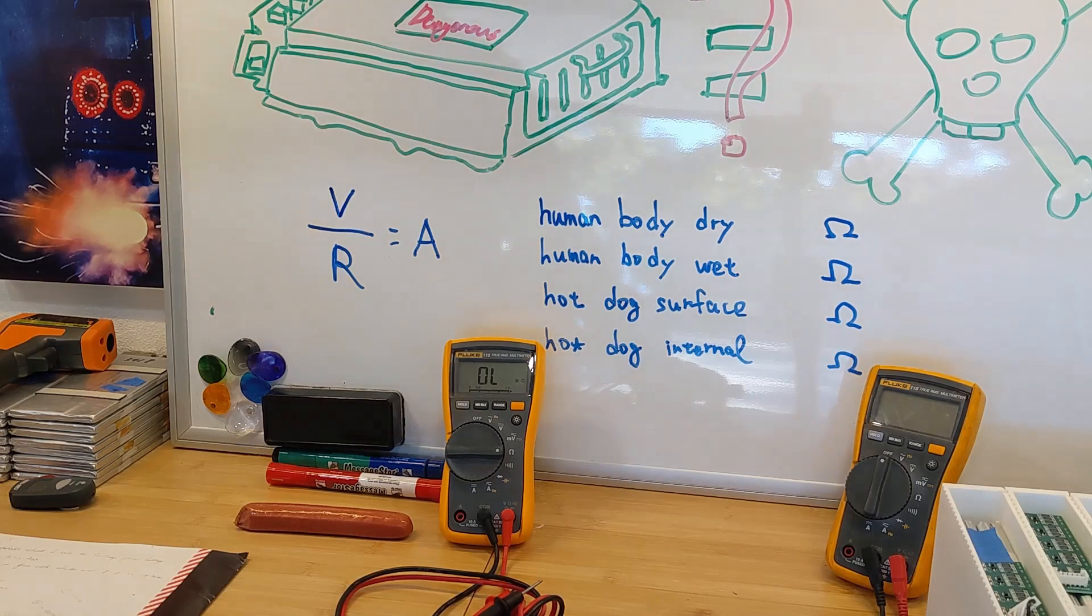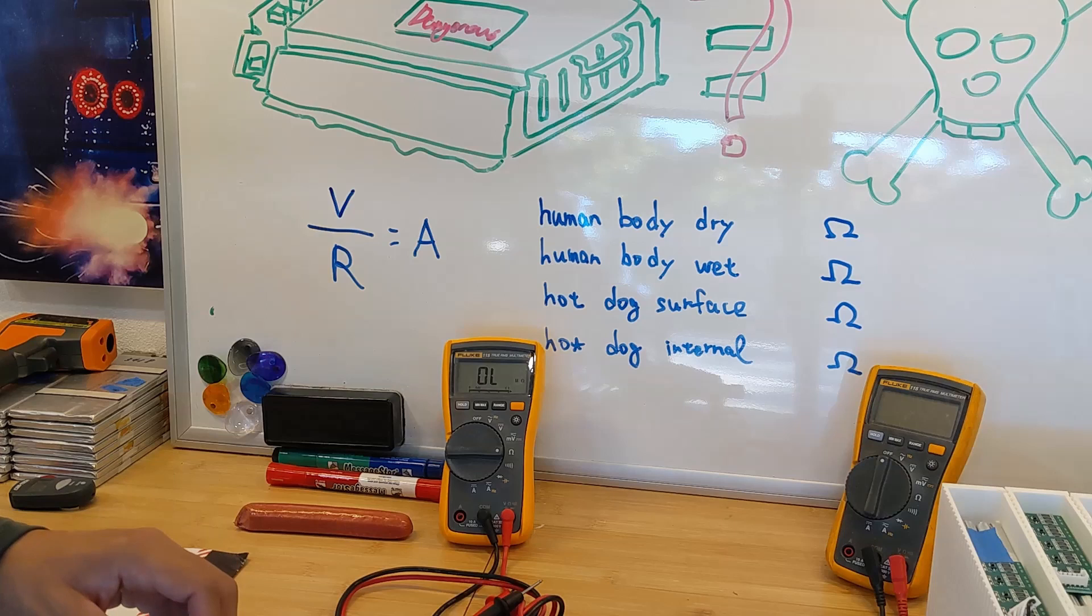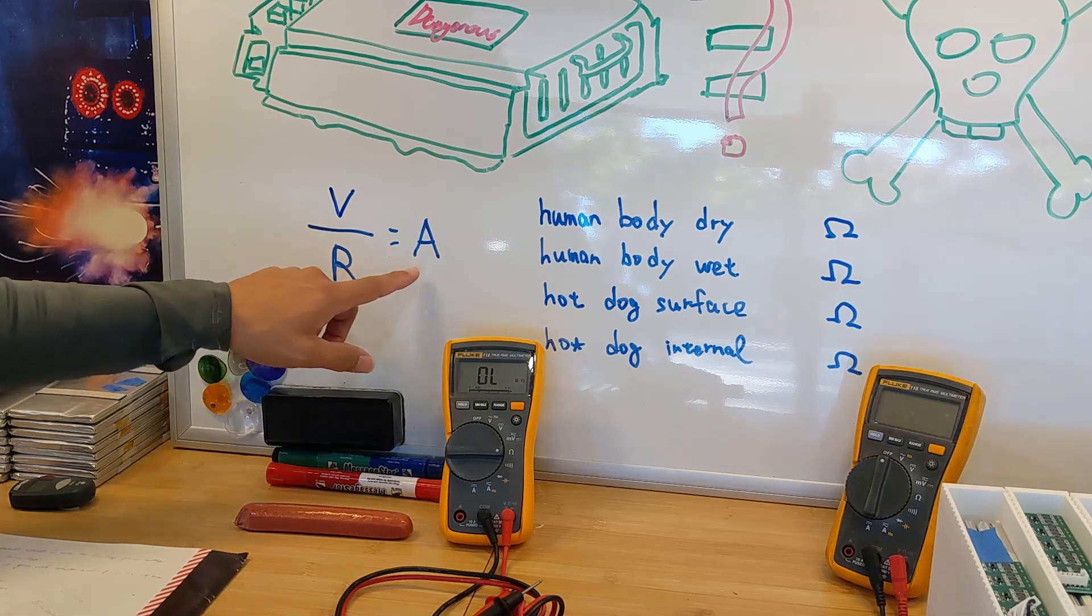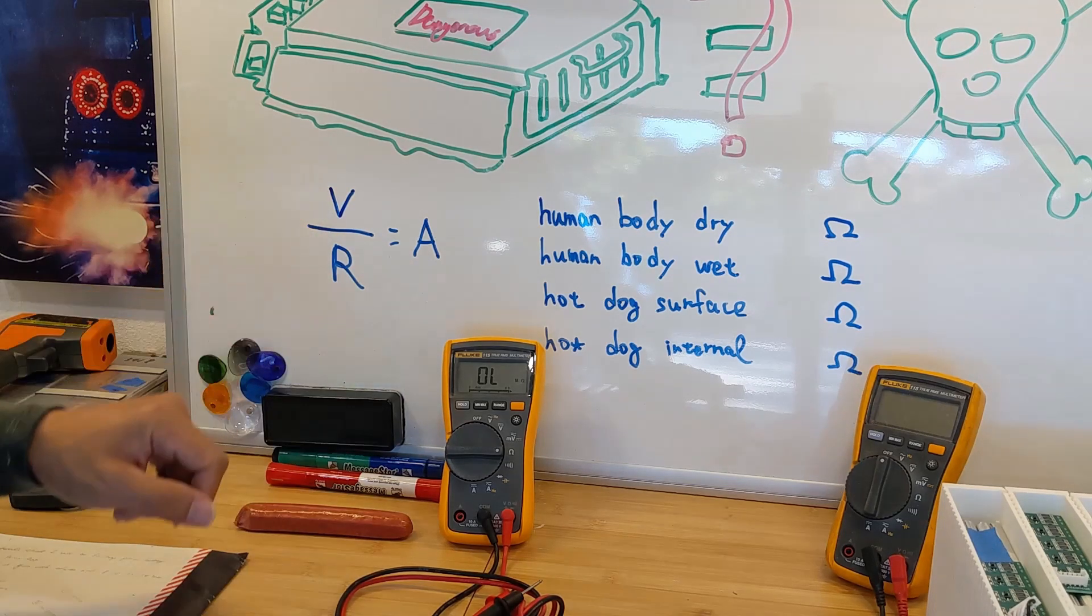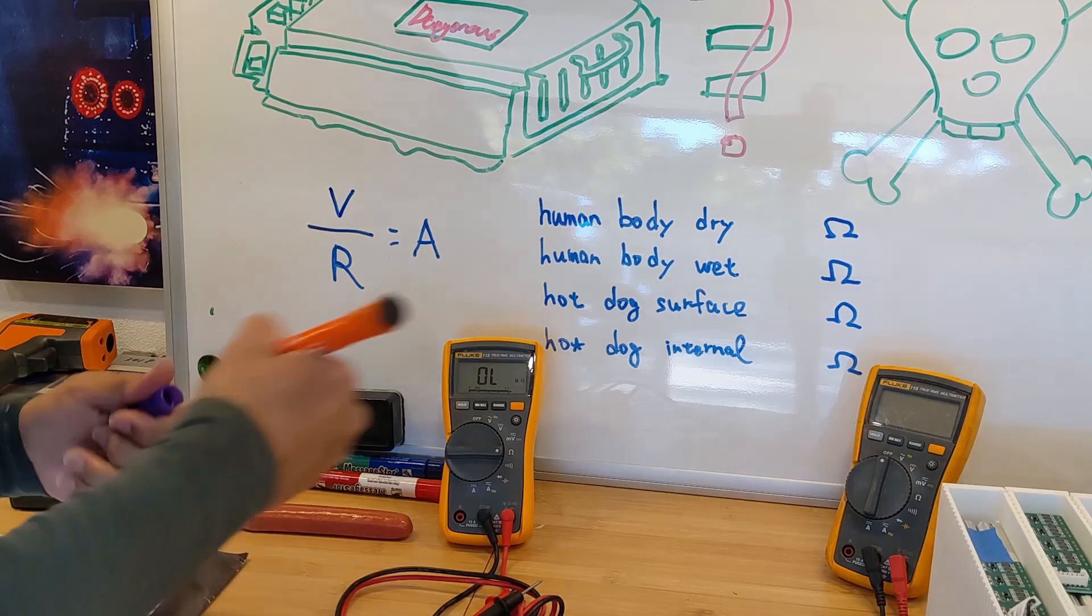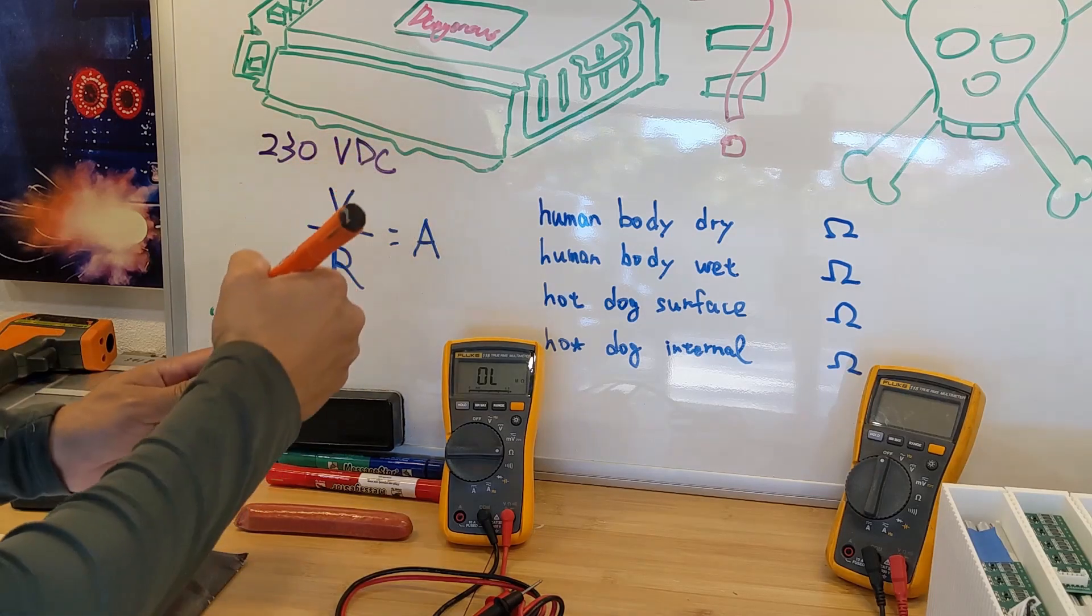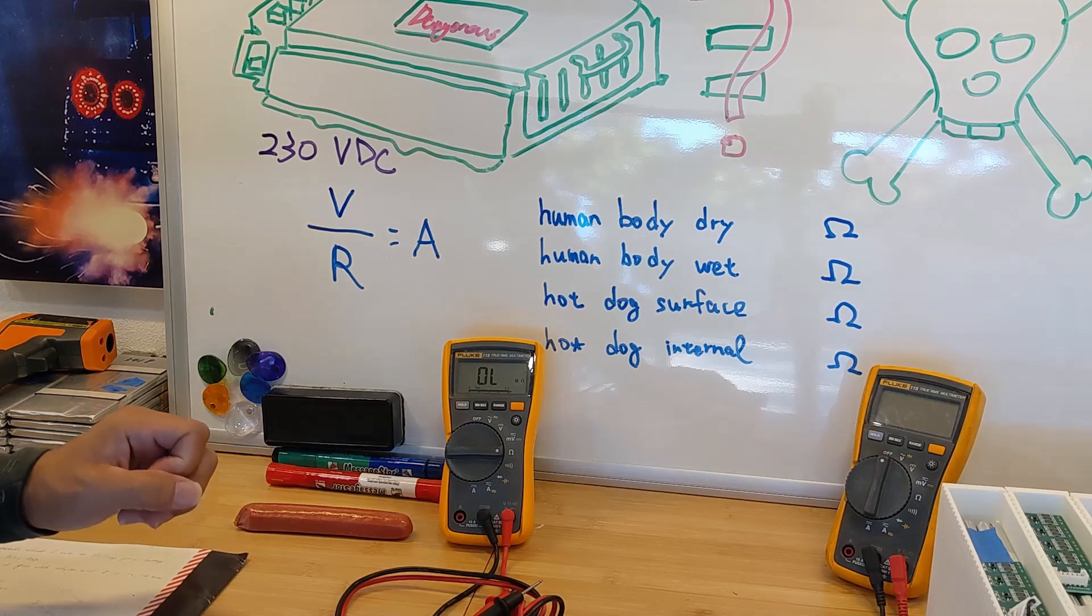Alright folks, so before I put myself in danger, let's do some calculations. Today my life is dependent on this formula: voltage divided by resistance equals current. So what does the voltage look like for a Prius? The Prius usually has around 220 volts. Our lithium battery has around 230 volts VDC. And this is DC, so direct current.